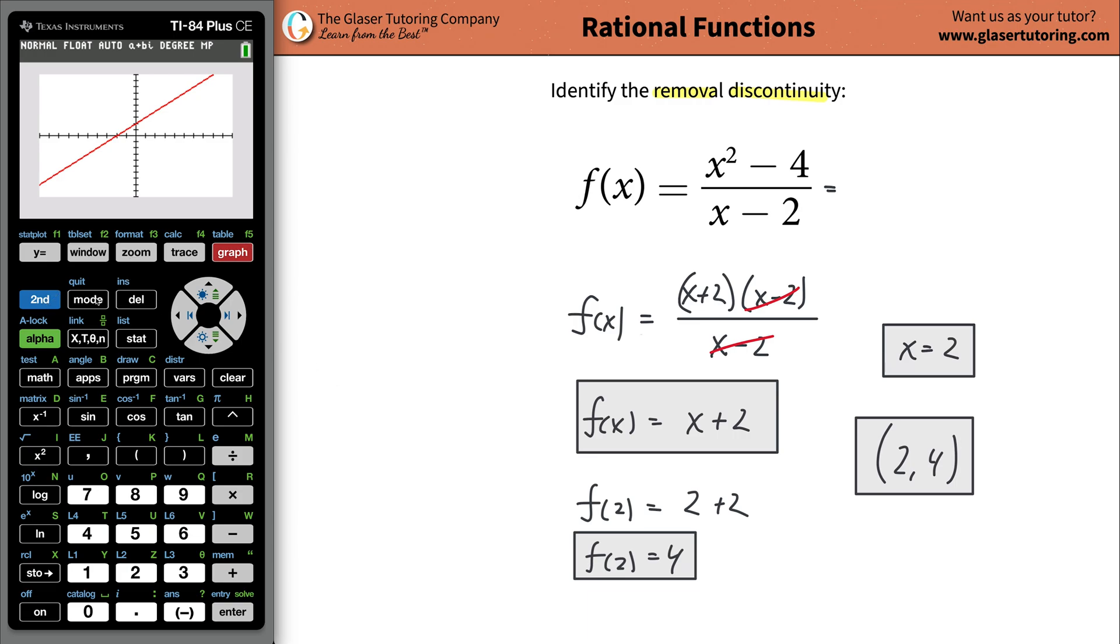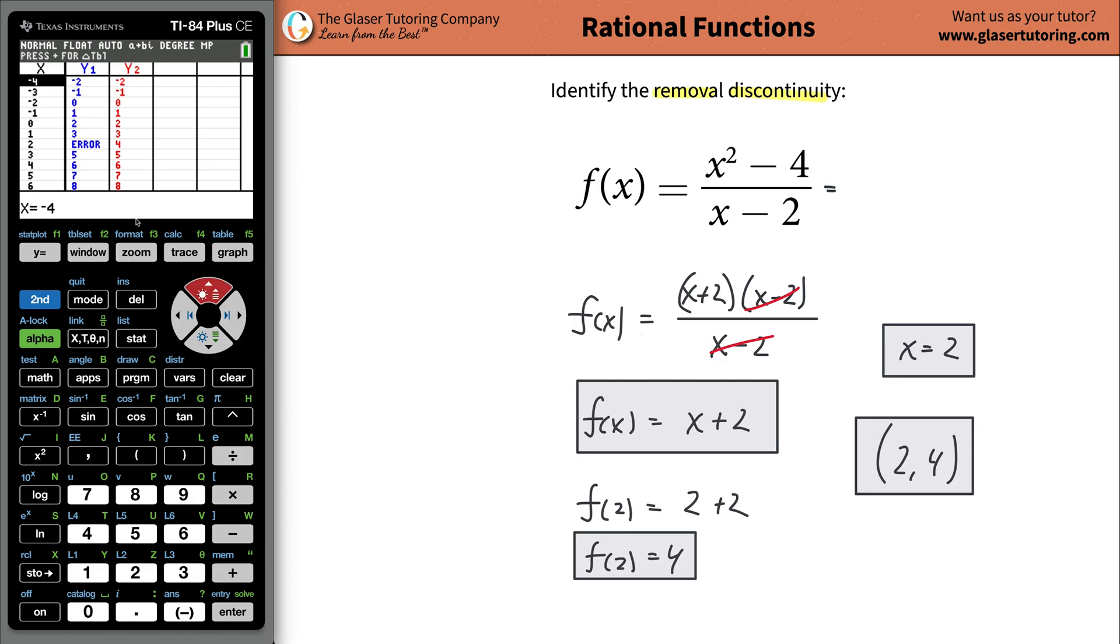So now watch. I'm going to go to the table function. Hit second graph to get the table. Now, if you notice, everything matches up perfectly between the first function I graphed and the second function. But there's one little issue. What does it say here? Error. What does it say here? Error.